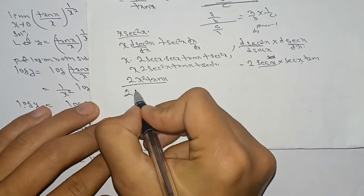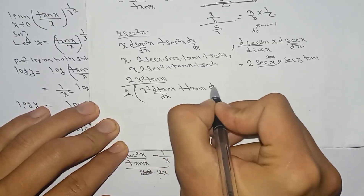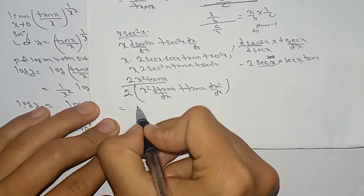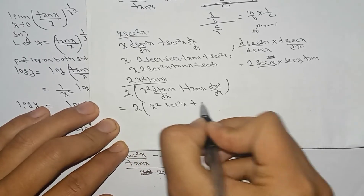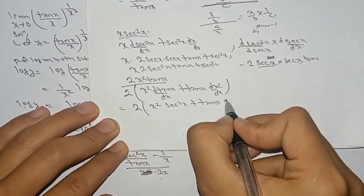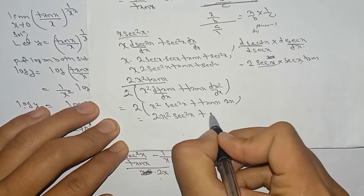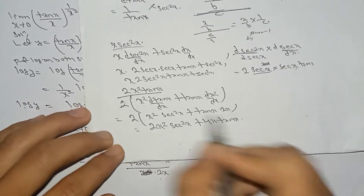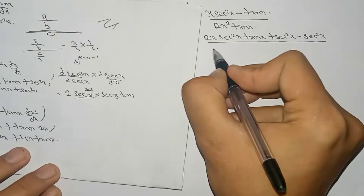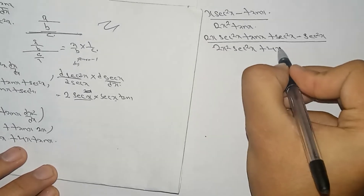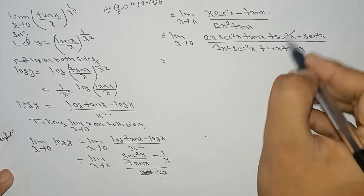For the denominator 2x²·tan x, we use the product rule with 2 as a constant: 2·[x²·d(tan x)/dx + tan x·d(x²)/dx] = 2·[x²·sec²x + tan x·2x] = 2x²·sec²x + 4x·tan x. So we can write the denominator derivative as 2x²·sec²x + 4x·tan x.